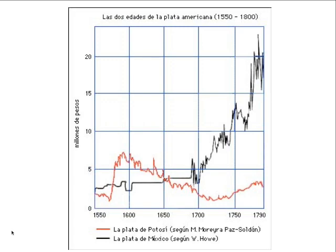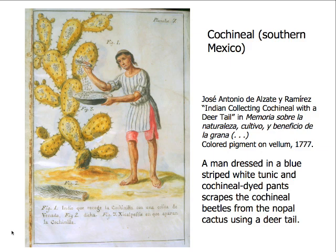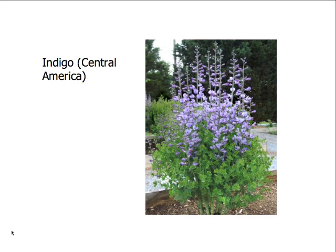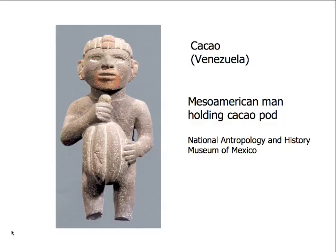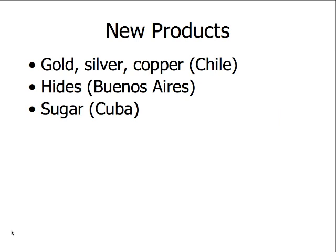Aside from these traditional areas of silver mining, the 18th century saw the introduction of a wide range of new export products from different places in Spanish America. There was cochineal production from southern Mexico — the red dye produced from the females of a small insect. Indigo, a dye from plants, was important in Central America. Gold became more and more important from the areas of Popayán and Antioquia in Colombia, and cacao in Venezuela. There were also new areas of gold, silver, and copper production in Chile, the growing importance of the export of cattle hides from Buenos Aires — which would be really the key to the 19th century — and then the export of sugar in Cuba.